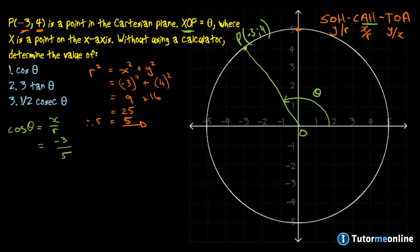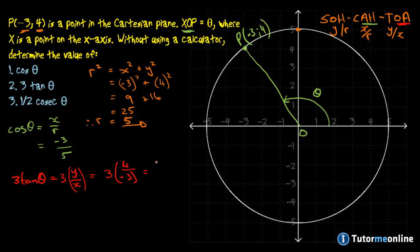Let's have a look at the second question. We need to determine 3 tangent of theta. Tangent is our opposite over our adjacent which would be y over x, and we need to multiply by 3. So that is 3 and we substitute the values. Y is our length of 4 over minus 3. This would be 3 over 1 multiplied by 4 over minus 3. The 3s cancel out and we would be left with negative 4.